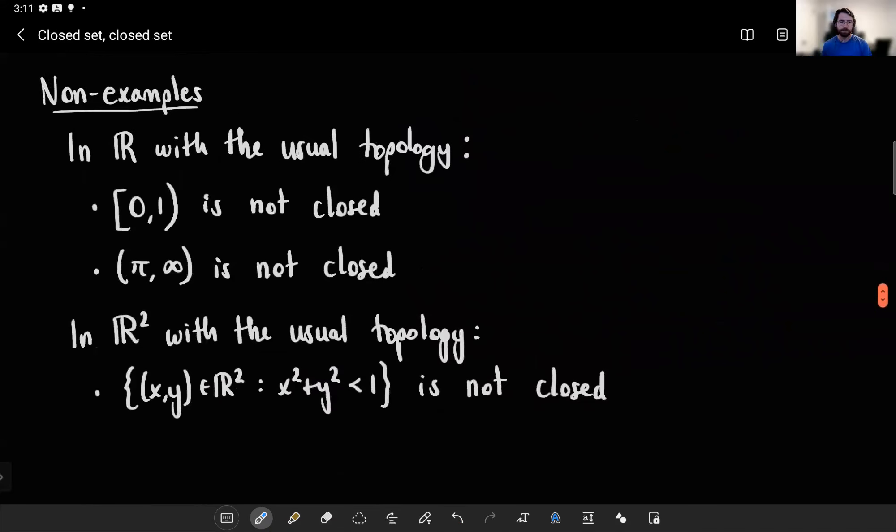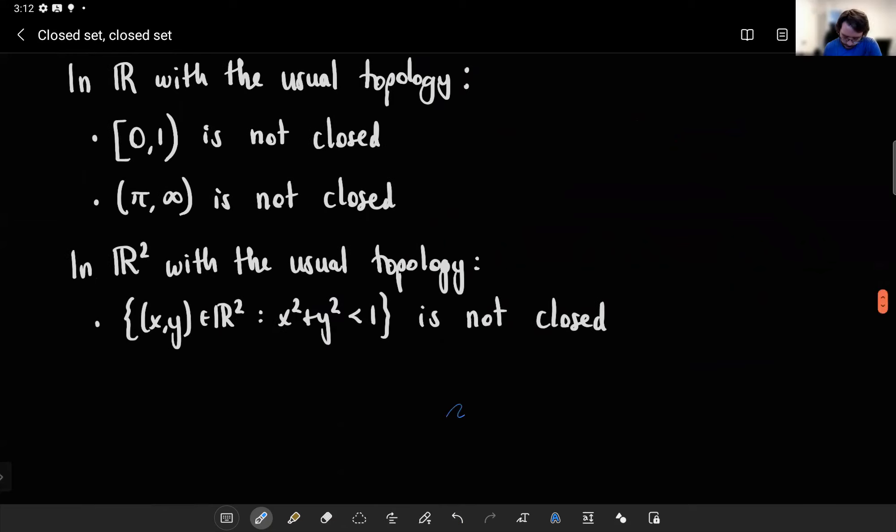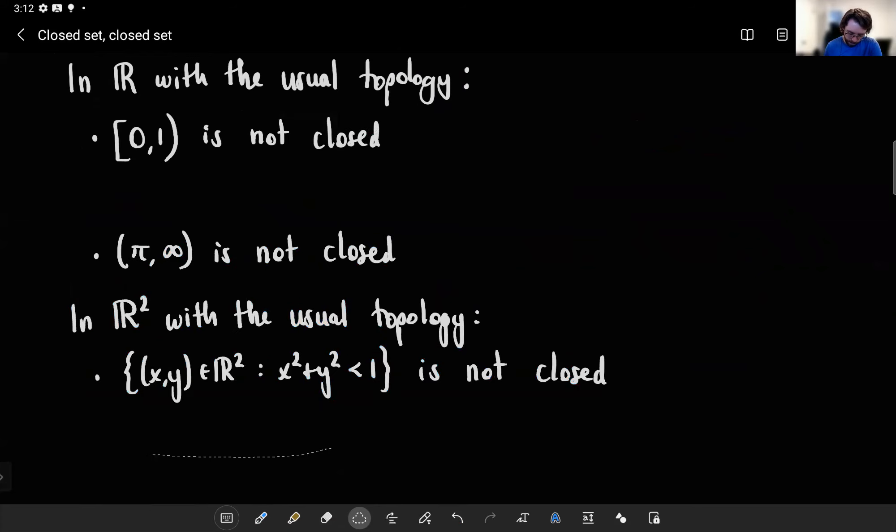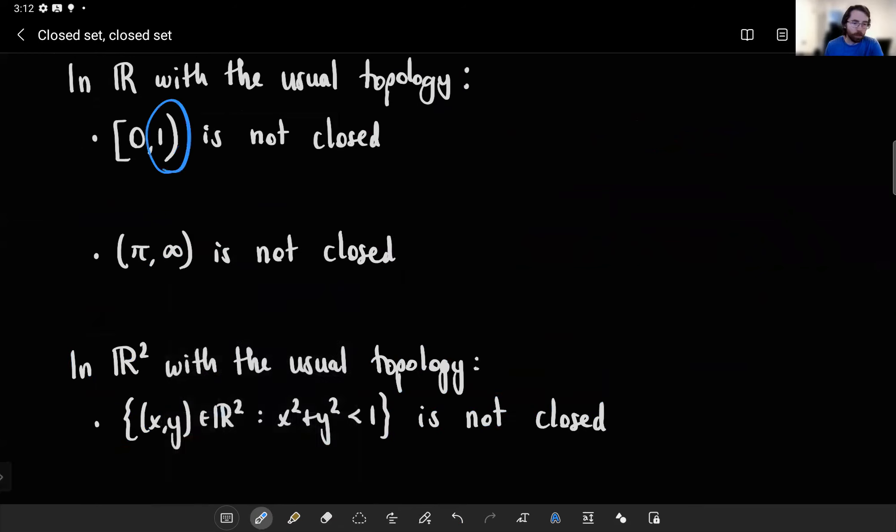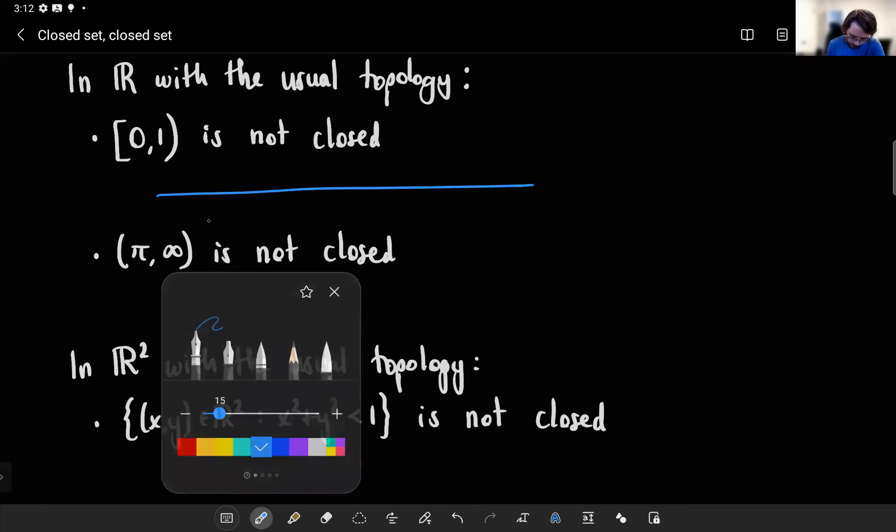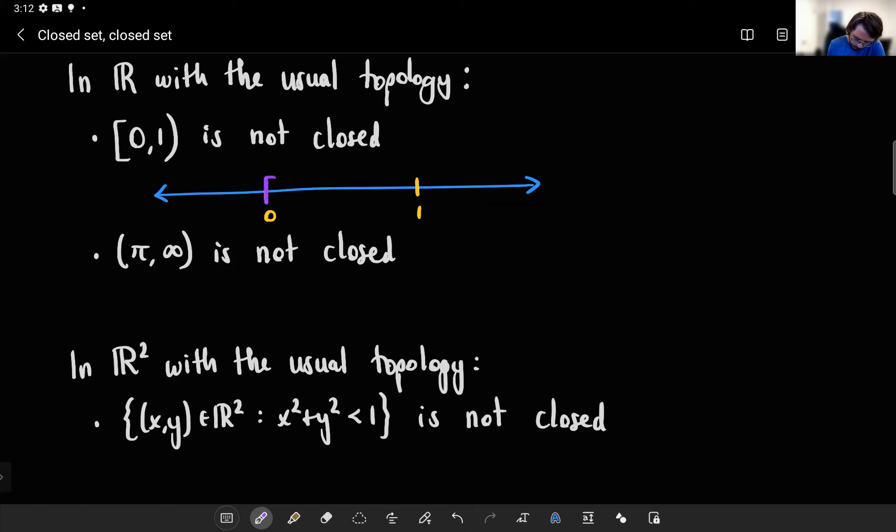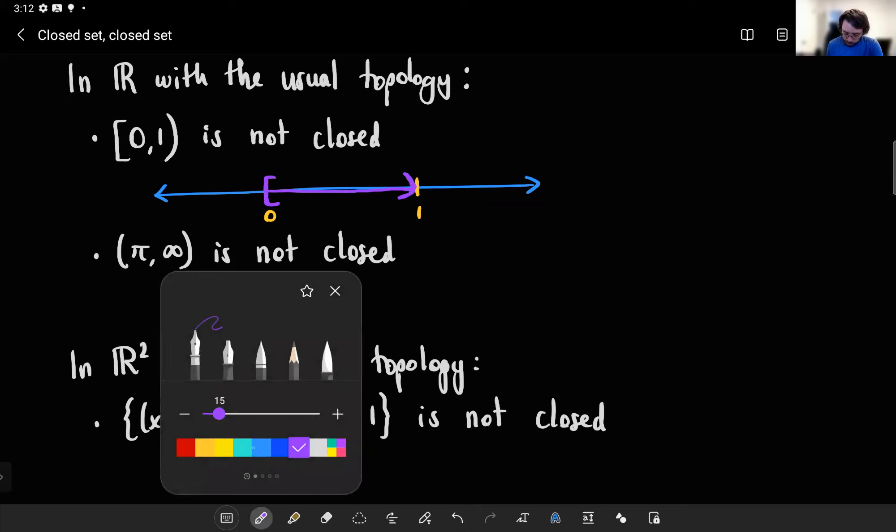How about some non-examples? So in R with the usual topology, this thing is not closed - the interval from 0 to 1 closed on one side, open on the other. And again, that should agree with your intuition about limit points and all that. Namely, it's missing 1, 1 is a limit point. But you could also phrase it like we were phrasing it before in the topological sense, which in my opinion is much nicer, by saying that looking at this interval closed on one side, open on the other, well it's not closed because its complement - what would its complement look like?